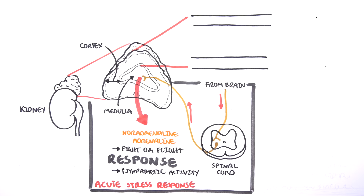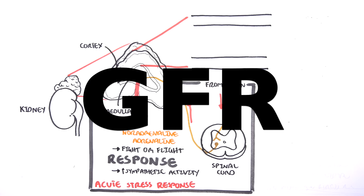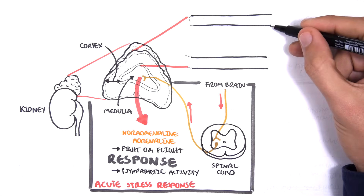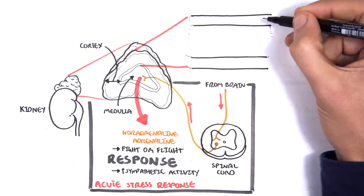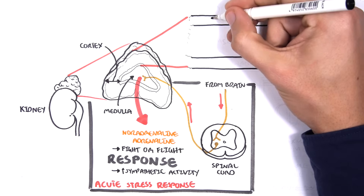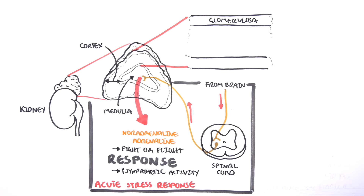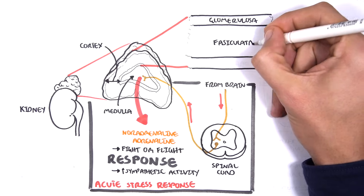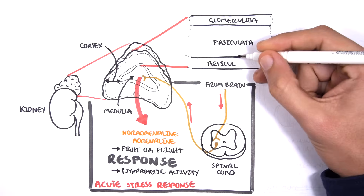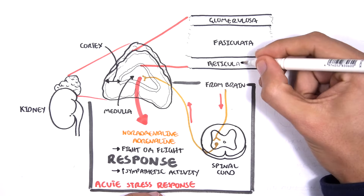The adrenal cortex has three main layers, which can be remembered from the top as GFR — similar to the GFR of the kidneys. The very outer layer is the zona glomerulosa, F is for zona fasciculata, and R is for zona reticularis.